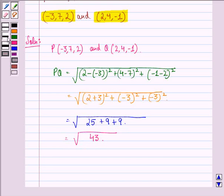So our answer to the question is, the distance between these two points is given by square root of 43. I hope that you understood the question and enjoyed the session. Have a good day.